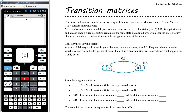This diagram shows what happens. Of the trucks that start at warehouse A, 0.3 or 30% end up at warehouse B and 70% end up back at warehouse A. Of the trucks that start at warehouse B, 40% end up at warehouse A and the remaining 60% return to warehouse B.